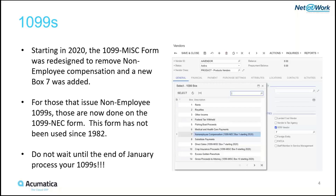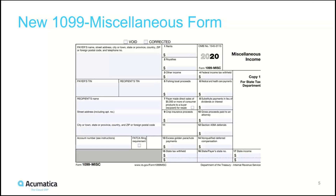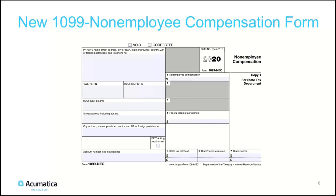Here's an example of the new 1099 miscellaneous form. Where box 7 used to be non-employee compensation, it's now just a box that says payer made direct sales of $5,000 or more to a buyer for resale. On the NEC form, it's pretty straightforward — non-employee compensation is box 1, with federal income tax withheld and state tax withheld also included. That is the new NEC form.